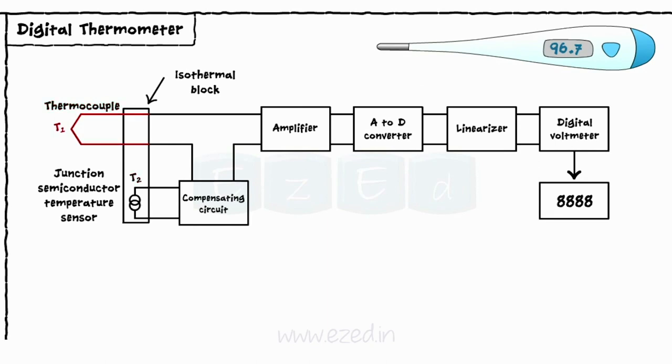Wires from junction T1 are screwed directly to an isothermal block terminal strip. The temperature T2 of this block is measured by the sensor and applied to the compensating circuit.